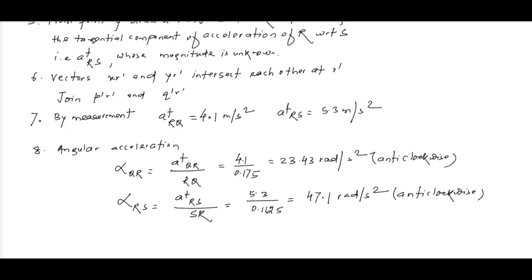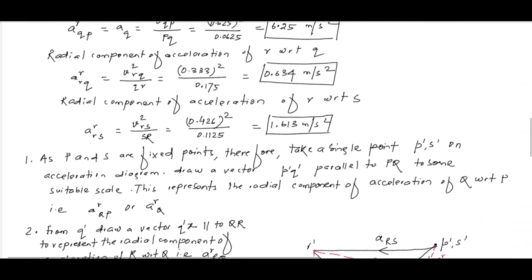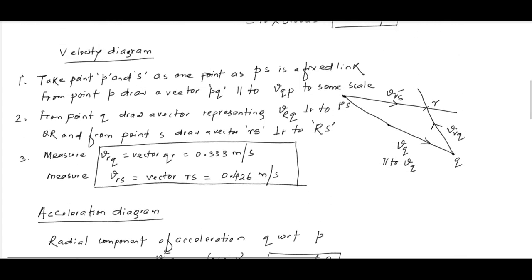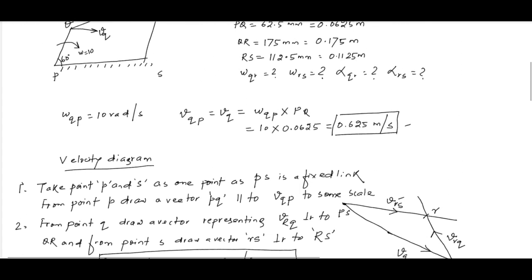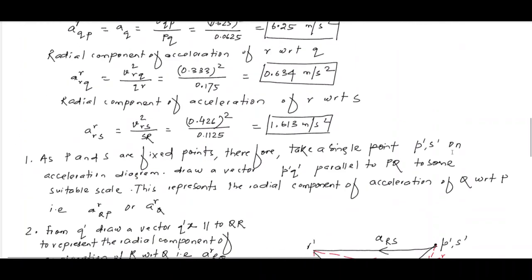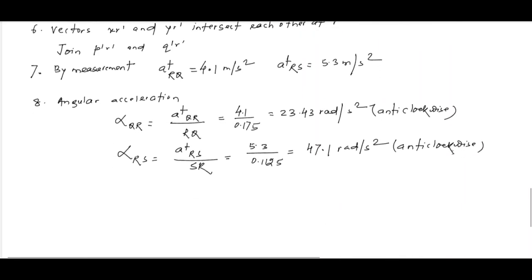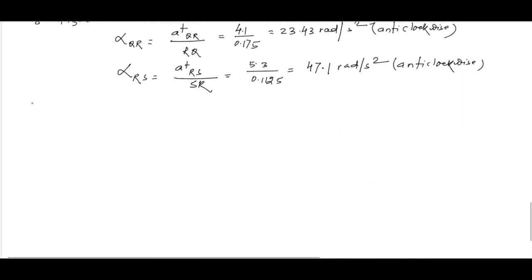This is how you solve the problem of acceleration of a four-bar chain. You must also be clear about the velocity diagram, as both diagrams are drawn together. I'm now giving you Assignment 2 with raw questions to practice.